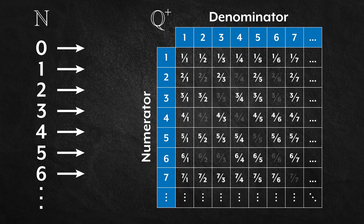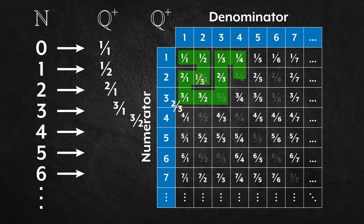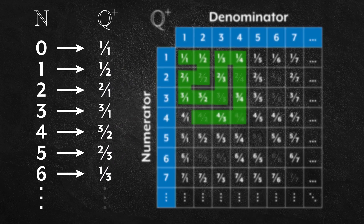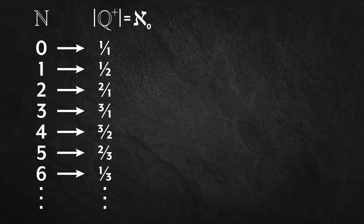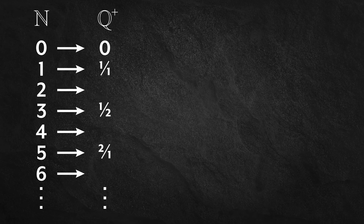And the set of positive rational numbers, which is tabulated here with all positive numerators and denominators considered and duplicates grayed out, can also be put in a one-to-one correspondence with a set of natural numbers, so it too has a cardinality of aleph-not. And if we throw zero in the list and have each number followed by its negative, we have a one-to-one correspondence between the set of all rational numbers and the set of natural numbers. So the set of rational numbers also has a cardinality of aleph-not.